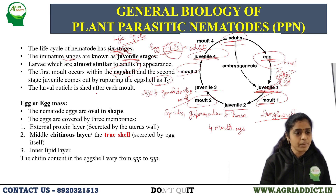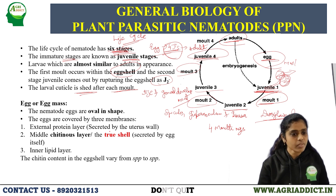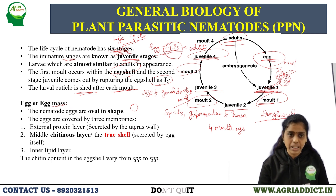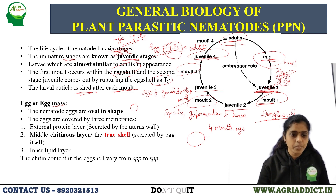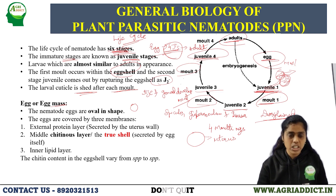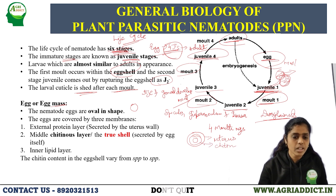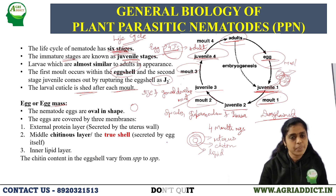At each molting, the larval cuticle is shed. Coming to the egg structure of nematodes, the eggs are usually oval in shape and covered by three membranes. The outer wall is made up of protein, called the external protein layer, secreted by the female nematode's uterus wall. The middle layer, also called the true shell layer, is secreted by the egg itself and is made up of chitin. The inner layer is made up of lipid. The presence of chitin varies from species to species.